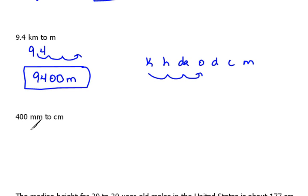And again, let's convert 400 millimeters to centimeters. So, milli would be here. In order to get to centi, we have to move 1 place to the left. So, we're going to do the same thing with our number. Move 1 place to the left, which would be 40 centimeters.